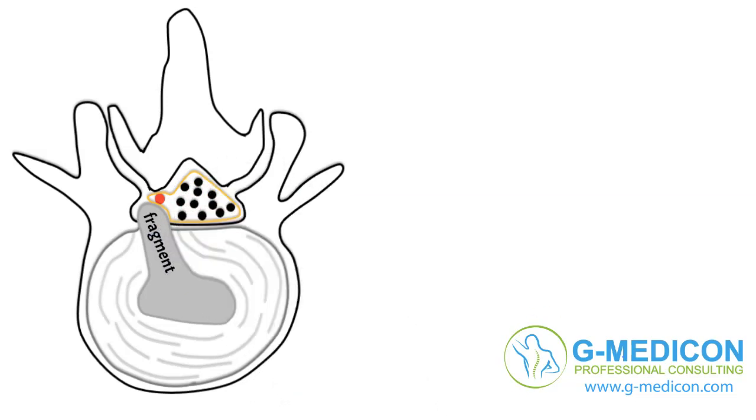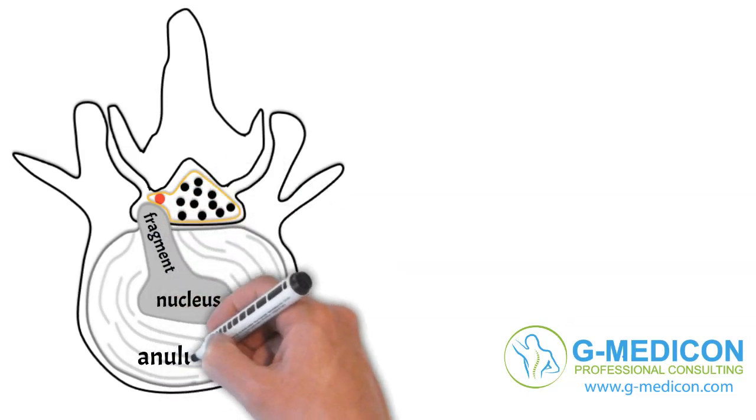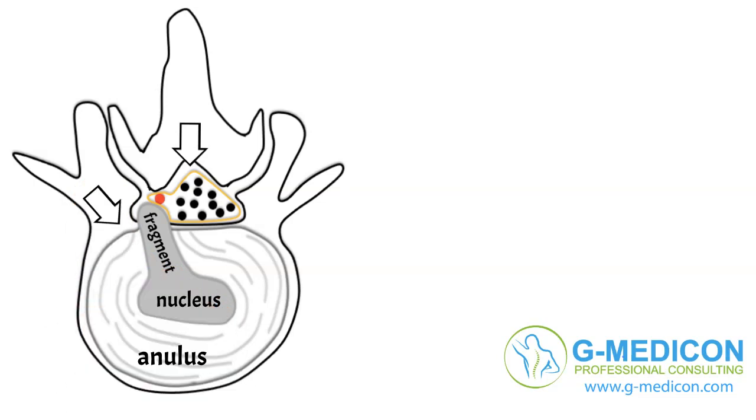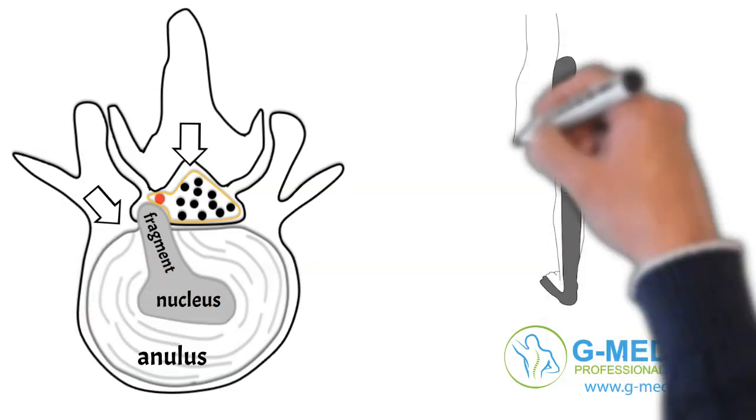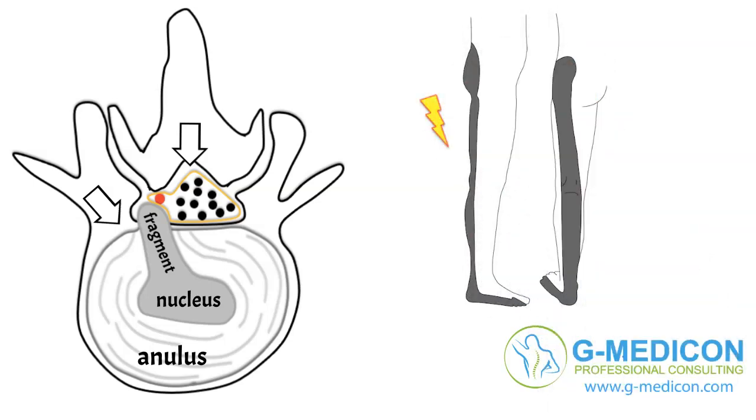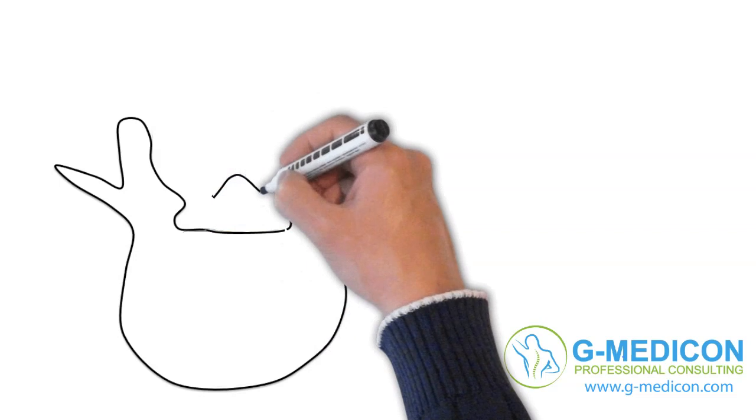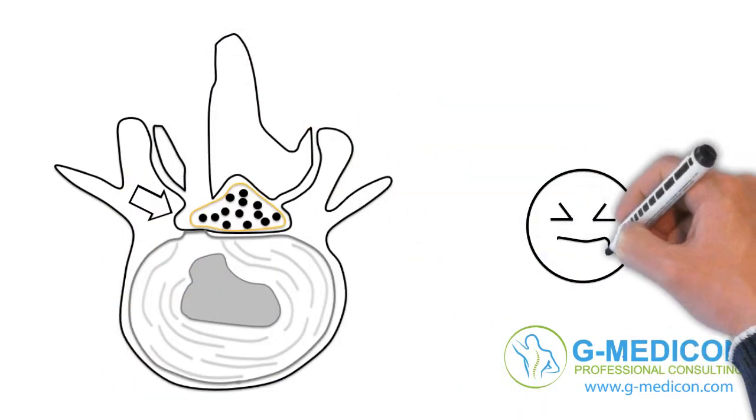A herniated disc is a fragment of the disc nucleus that is pushed out of the annulus into the spinal canal by a tear or rupture in the annulus. It puts pressure on the nerve roots, causing radiating pain into the legs. To solve this problem, we have to remove the herniated fragment and release the nerve root so the pain disappears.